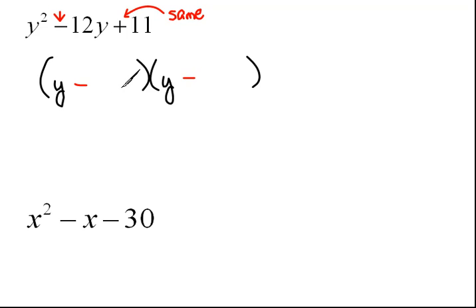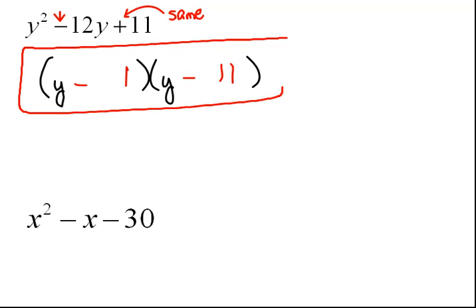Now, the last position, we have to multiply these together to get the 11. So what times what would be 11? Well, with 11, you only have one set of factors. It's just 1 times 11. So hopefully, this is the factorization.